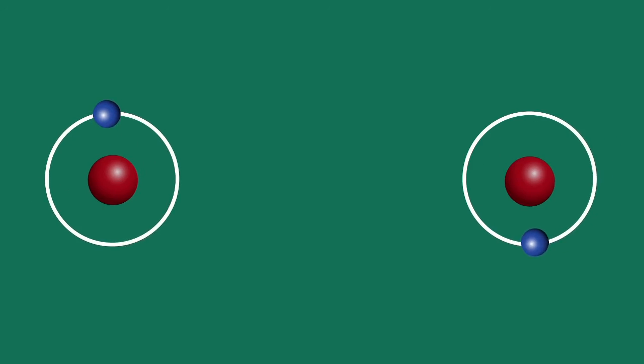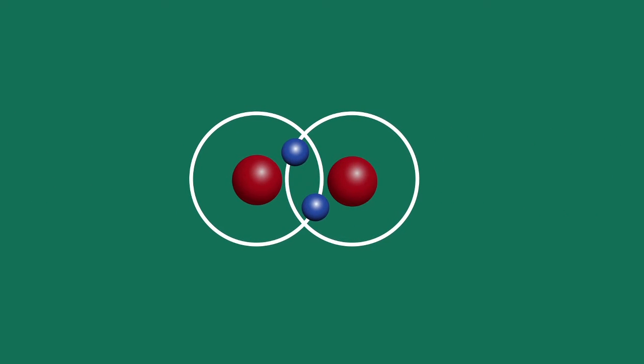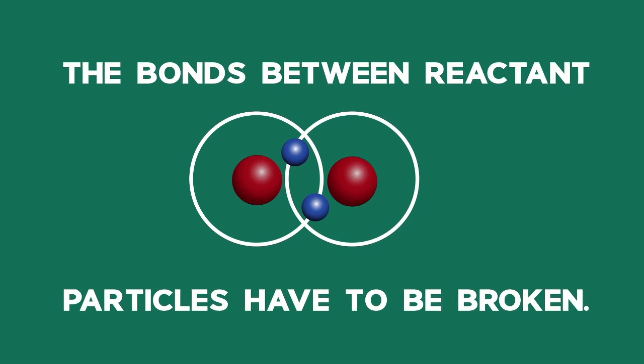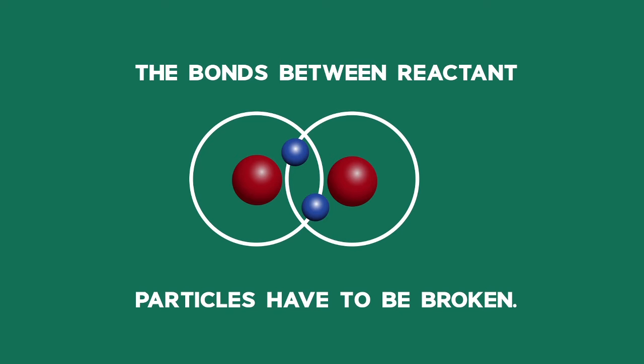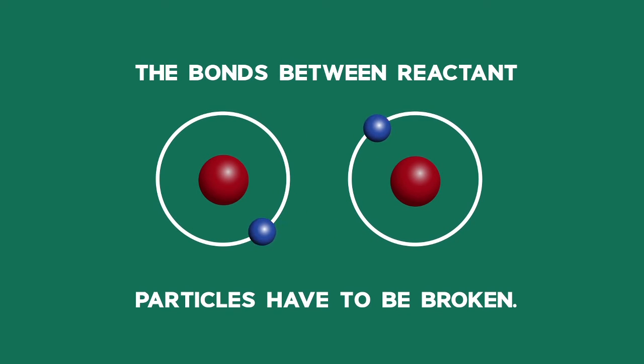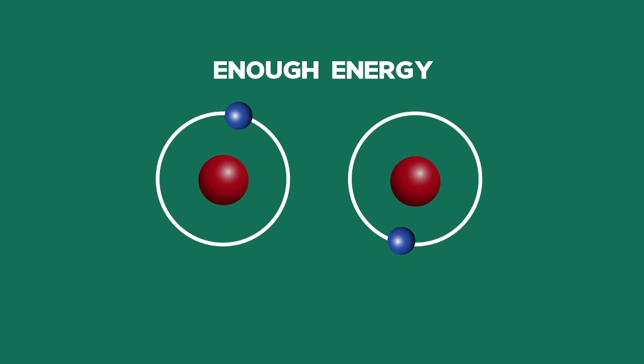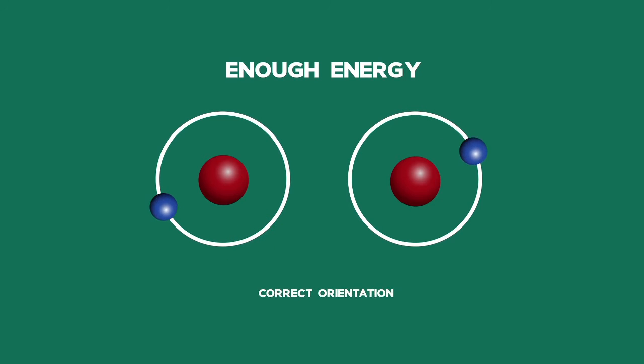In order for the chemicals to react with each other to make products, the bonds between the reactant particles have to be broken. The atoms also need to have enough energy and the correct orientation in order to form new products.